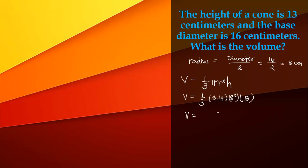So volume equals—8 squared is 64. 8 times 8 equals 64, and then multiply by 13. 64 times 13 equals 832. 832 multiplied